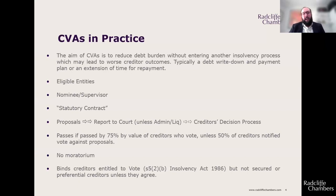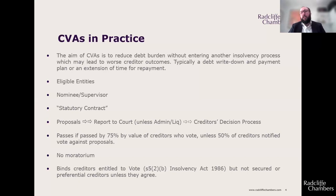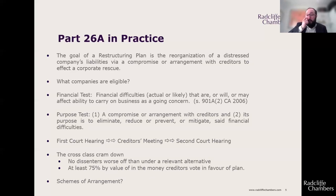The CVA does not bind secured or preferential creditors unless they agree, which is one of its great limitations. If your largest creditors are secured or preferential, they could take enforcement steps that undermine the CVA's success. Nevertheless, it is an important tool allowing a less formal attempt at restructuring a company's debt burden than a restructuring plan, which leads on to how Part 26A restructuring plans work. These were introduced under the Corporate Insolvency and Governance Act 2020.